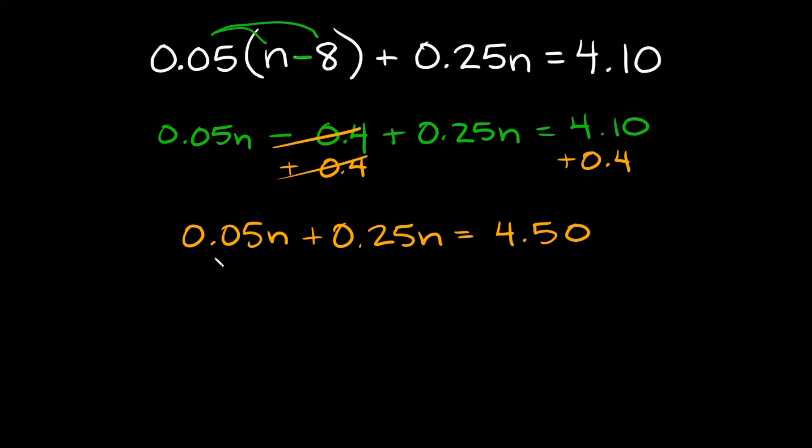So we're getting closer. Now what is 0.05 plus 0.25? That's going to be equal to 0.30. And since they both have an n on them you just keep the n. And then that's going to be equal to 4.50.